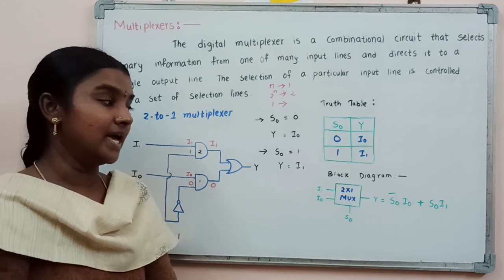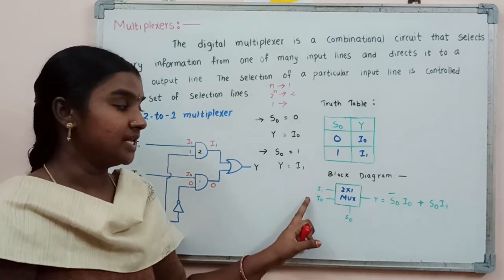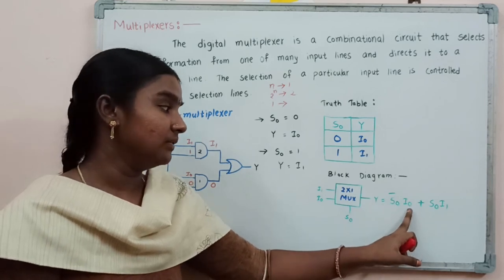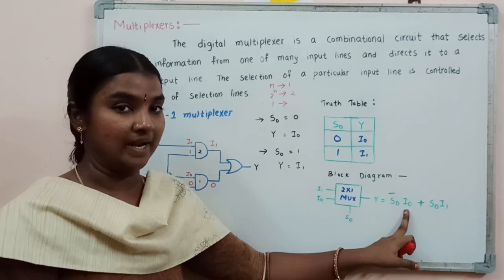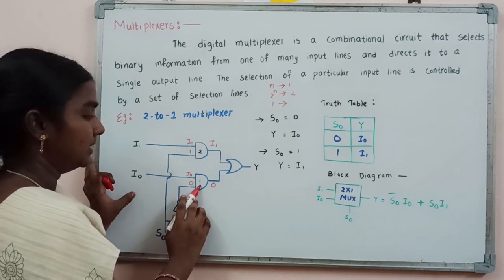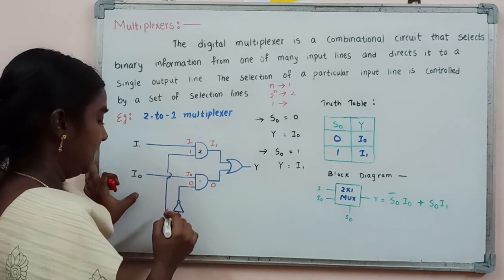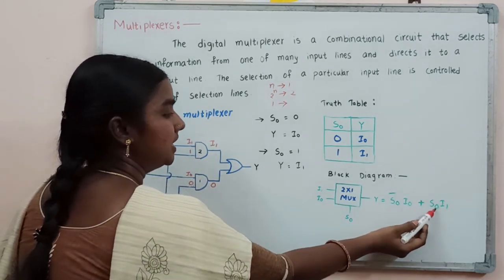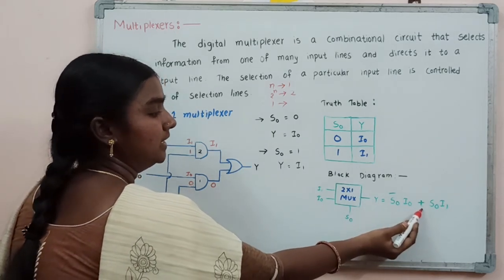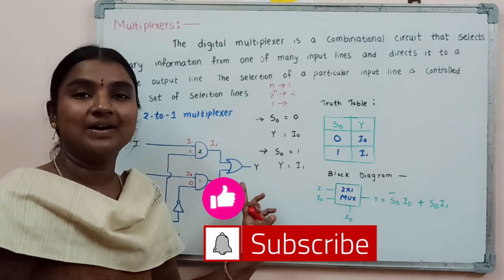The multiplexer may be abbreviated as MUX. The block diagram shows 2 input lines i0 and i1, one selection line s0, and output y. The logic equation for the 2-to-1 multiplexer is: y = (s0' · i0) + (s0 · i1), where s0 complement feeds the first AND gate with i0, and s0 directly feeds the second AND gate with i1, and their outputs are OR-ed together.